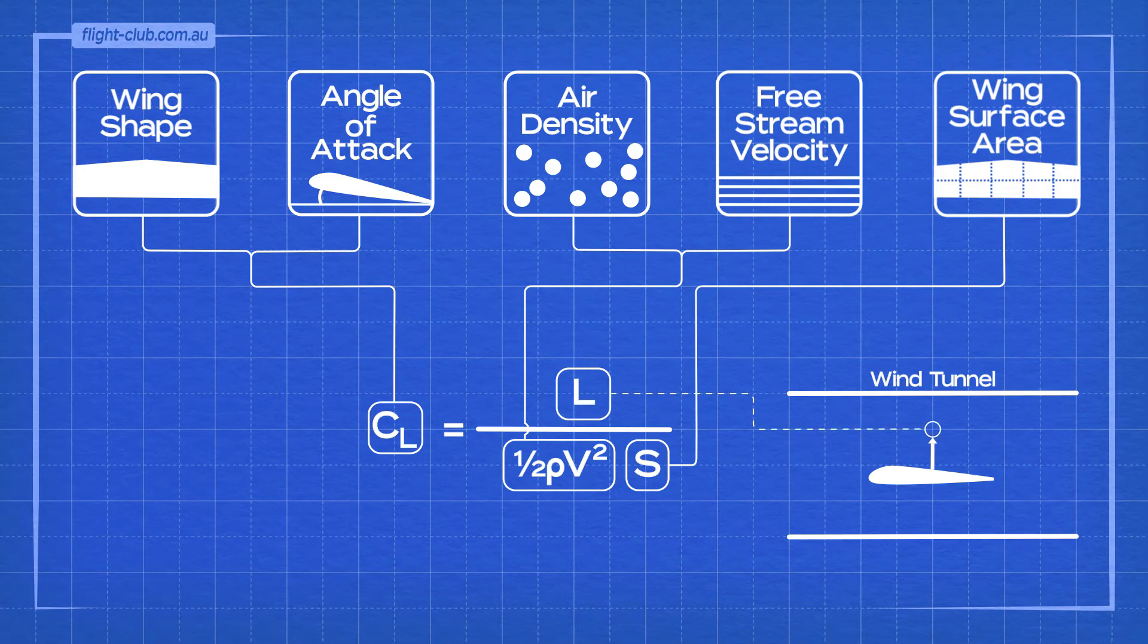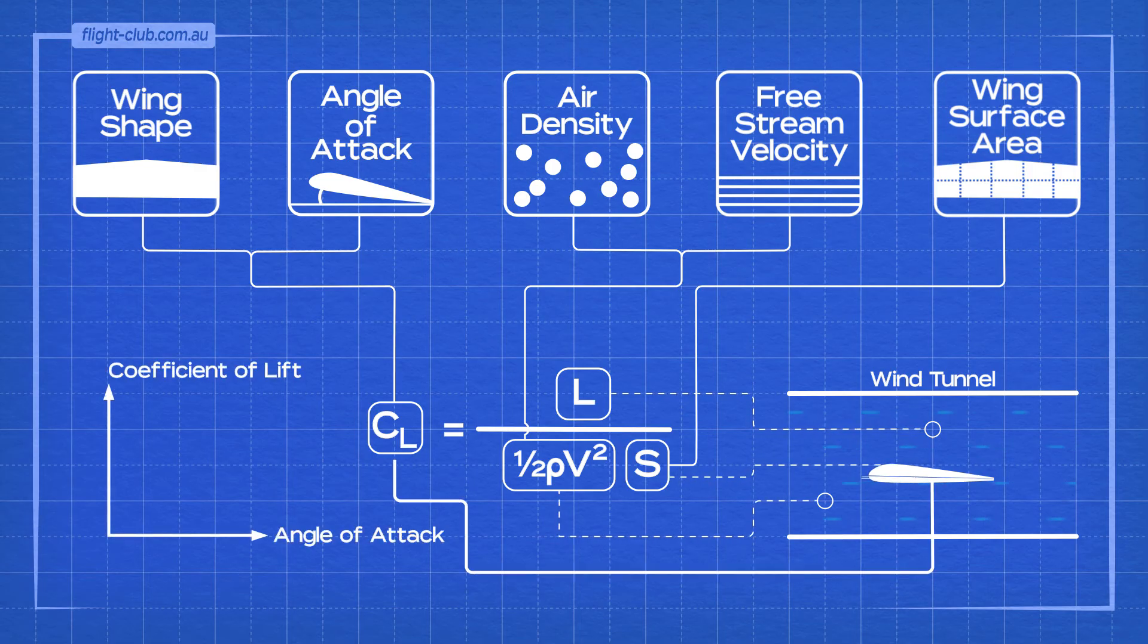We can measure lift. We can measure air density and the free stream velocity. We can also measure the wing surface area. All these measurements plugged into the formula can reveal a value for the coefficient of lift. By taking the measurements at each angle of attack, we can plot a graph that looks something like this.